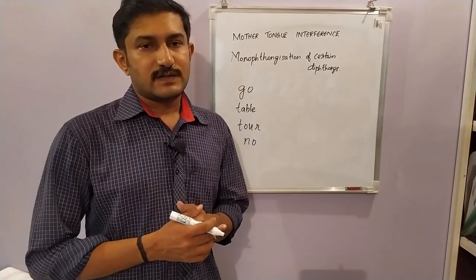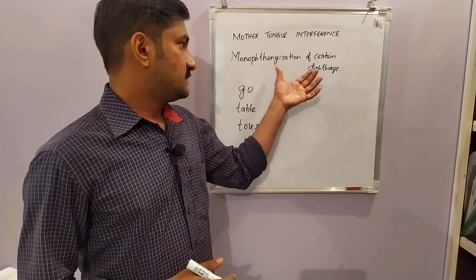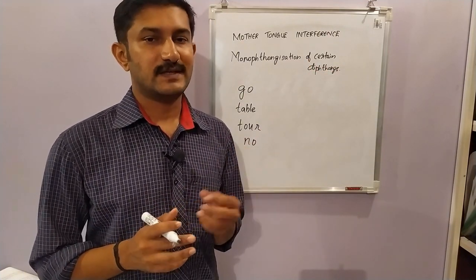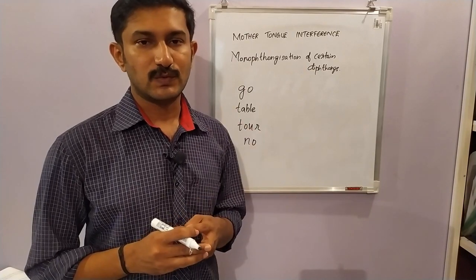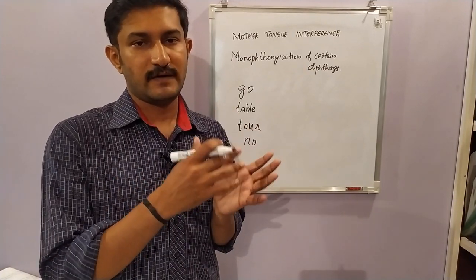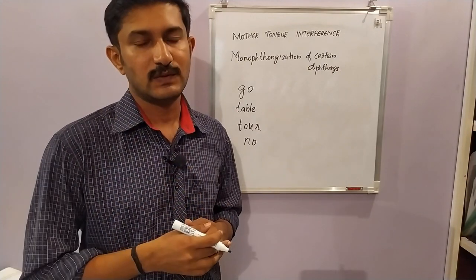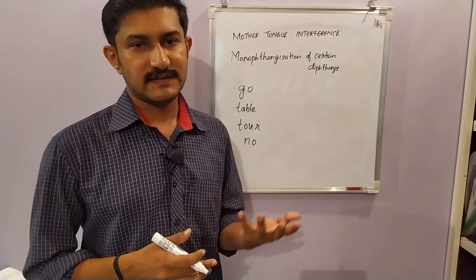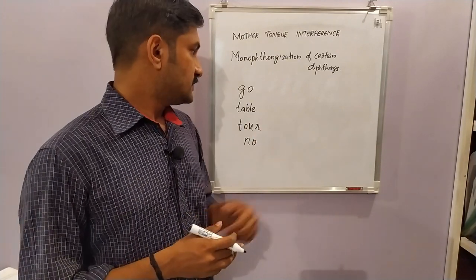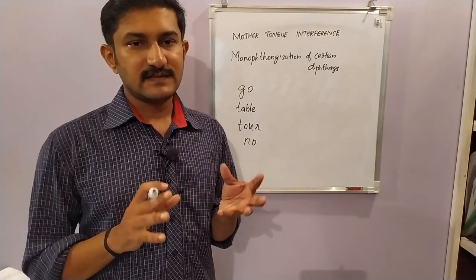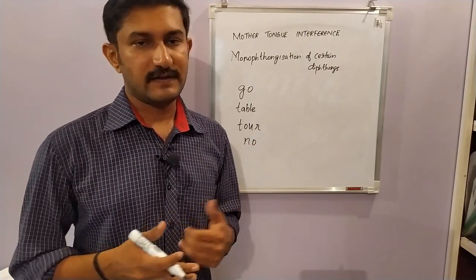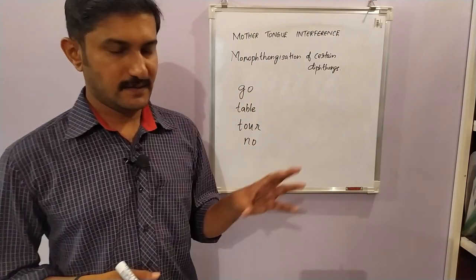The next problem with Indian speakers is monophthongization of certain diphthong sounds. Diphthongs are represented by digraphs having two vowel sounds. The tongue starts in the position of one vowel sound and it glides or moves to the position of the next vowel sound — that is why we call diphthongs as vowel glides. Regarding Indian speakers, they have a tendency to make certain diphthongs into monophthongs. We will take some examples.